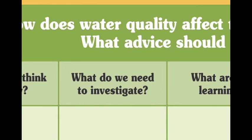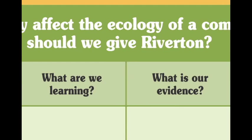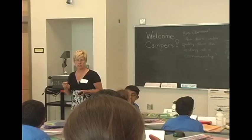On the project board, students keep records of what they think they know, what they need to learn, what they are learning, their evidence, and the implications of what they are learning. They revisit and revise what is in the columns many times during the unit.